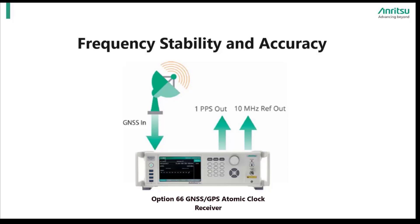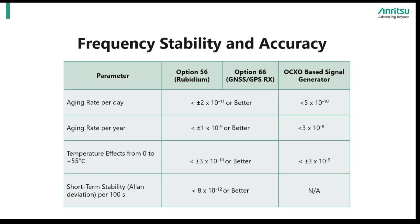We have added an additional table to show various parameters and their effect on the various Rubidium options. We have aging rate per day, per year, temperature effects, and short-term stability. We can see that Rubidium's Option 56 and 66 provide an order of magnitude or better performance across all parameters than the OCXO-based signal generator.